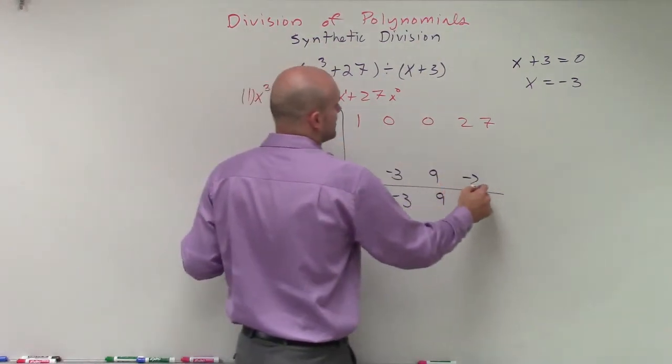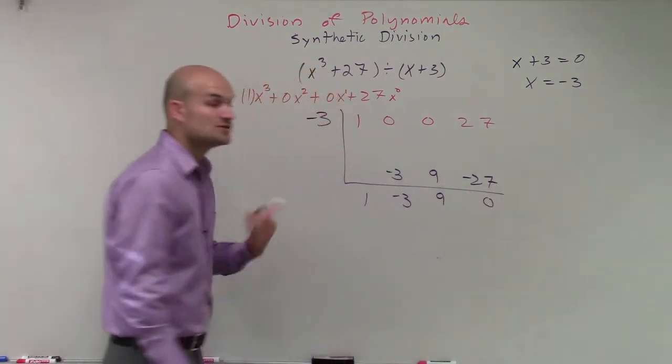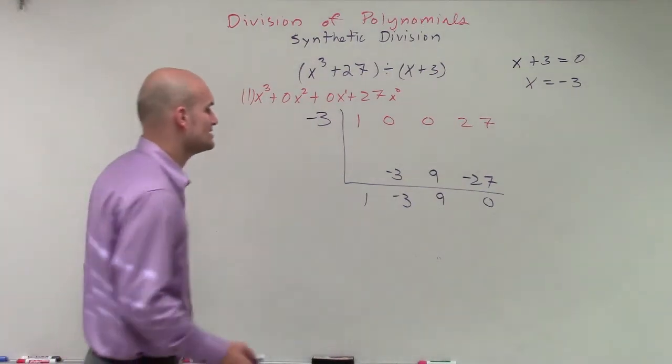9 times negative 3 is negative 27. 27 plus negative 27 is 0. So therefore, x plus 3 evenly divides into my polynomial, x cubed plus 27, because it has a remainder of 0.